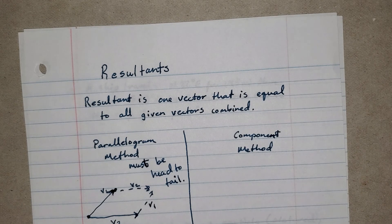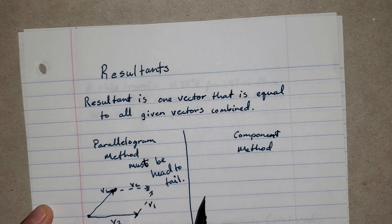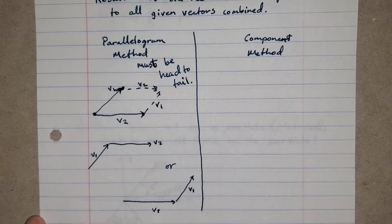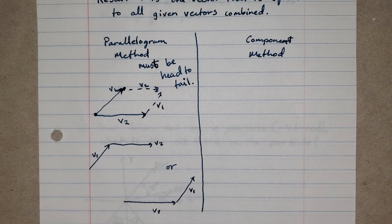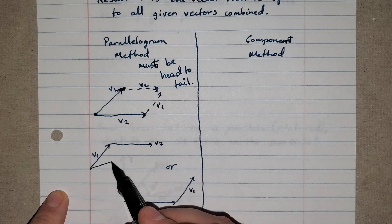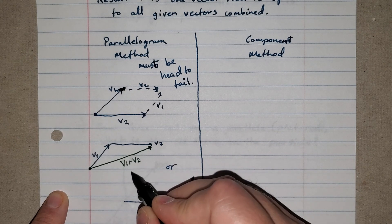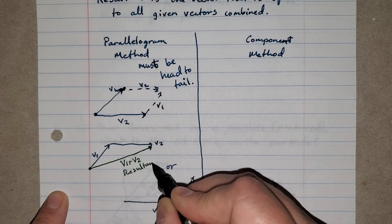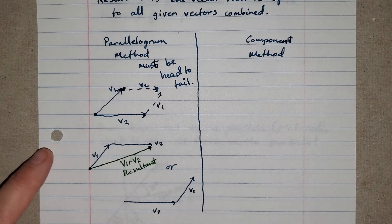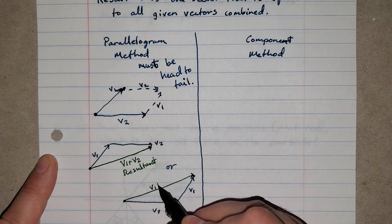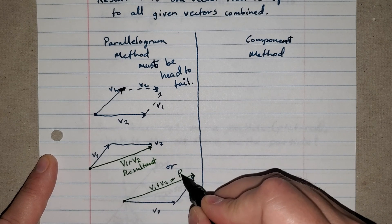What you end up with is half of a parallelogram. If I go from the tail of the first vector to the head of the last vector, this is V1 plus V2, which we call the resultant R.